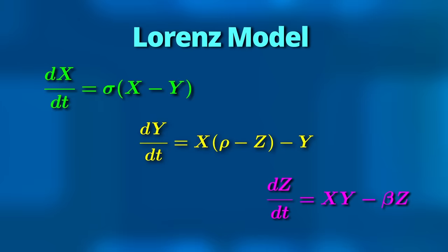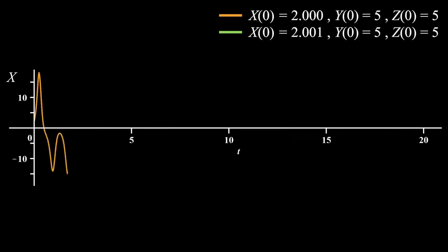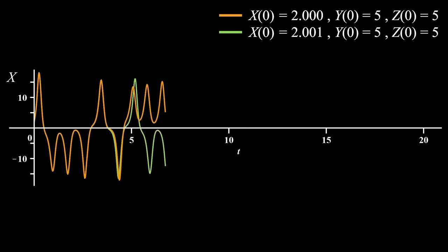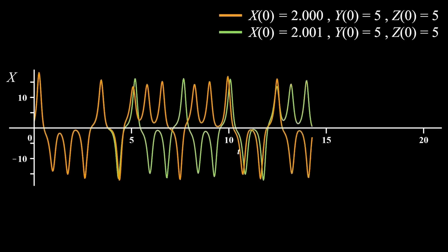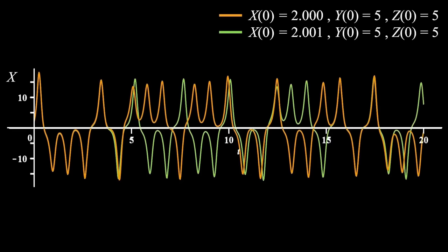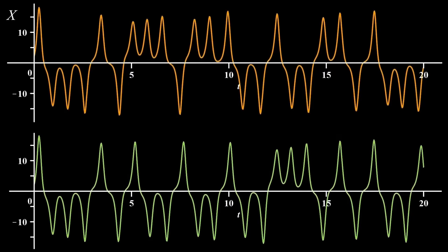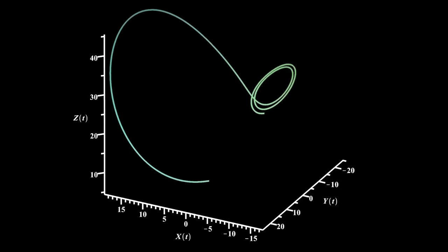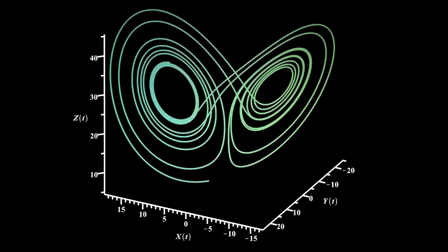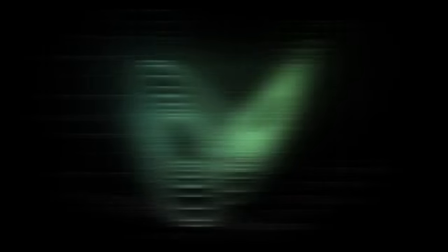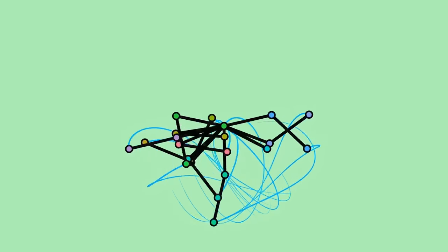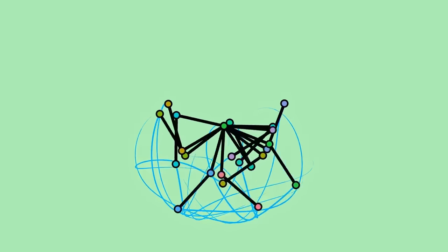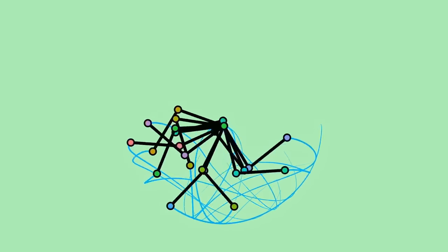The Lorenz model has become the most famous example for chaos. This is because if you solve the equations, their solutions are very sensitive to the exact starting point. Make it a tiny little bit different, and they'll look similar initially, but then diverge until they're completely uncorrelated. You can plot the solutions as curves in an abstract three-dimensional space, and they converge to a peculiar shape that coincidentally resembles a butterfly. You can find this sensitivity to exact initial conditions in many other systems, like the double pendulum. It's the hallmark of chaos.